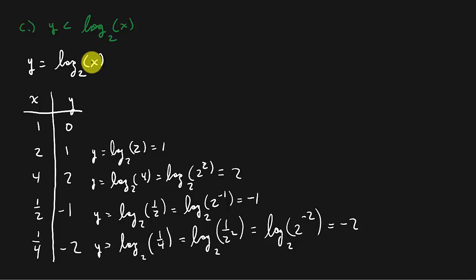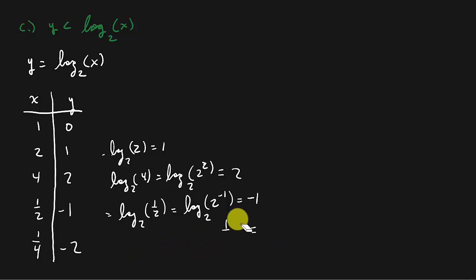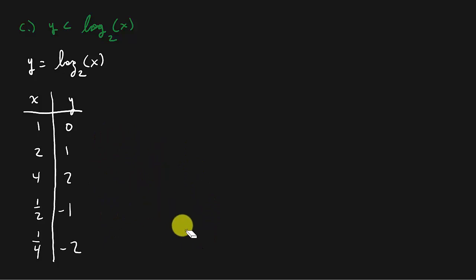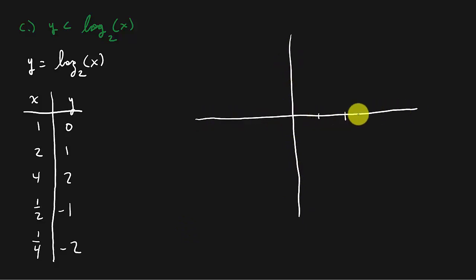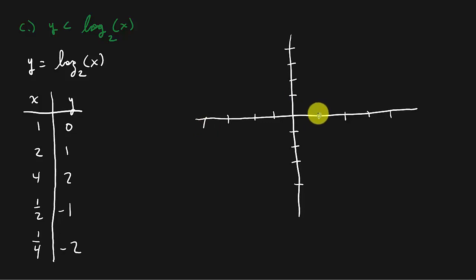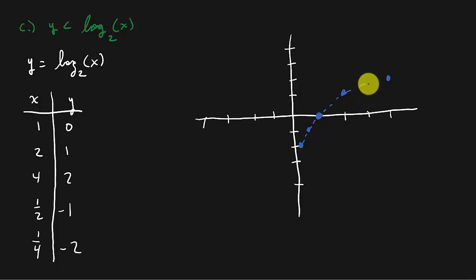Now let's graph this. Plot the points: (1,0), (2,1), (4,2), (1/2, -1), (1/4, -2). Draw it as a dashed line. Also remember with logarithms, you cannot draw the graph crossing the y-axis — it gets close but doesn't touch it.